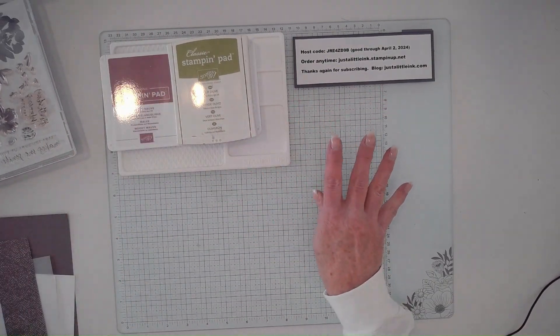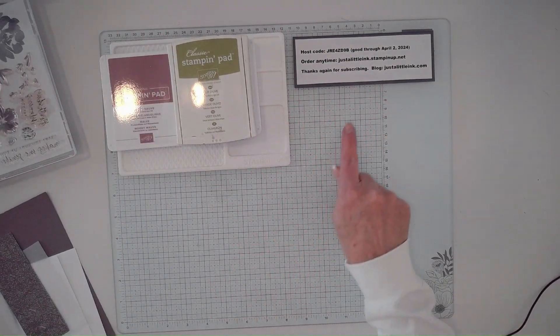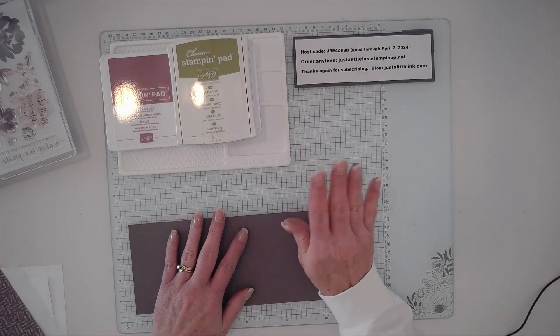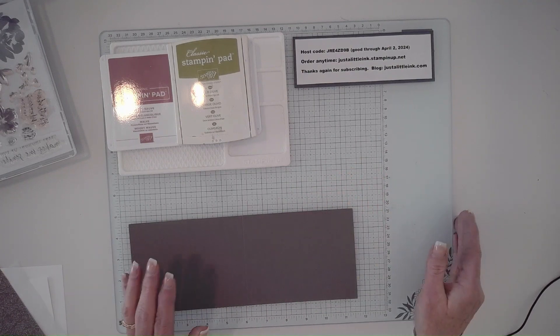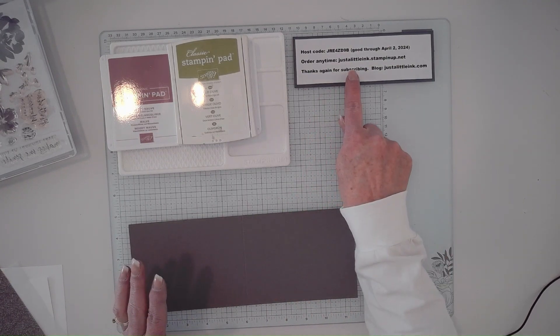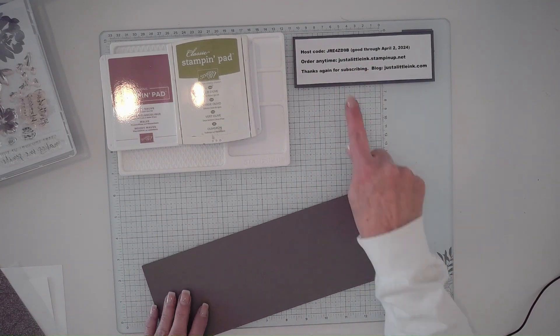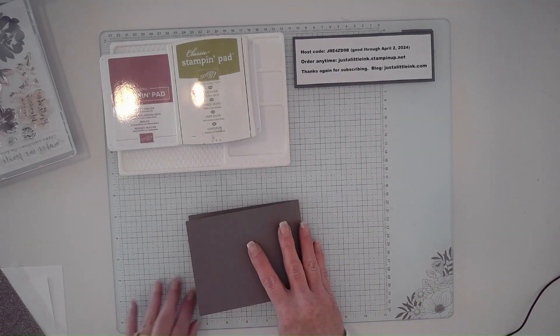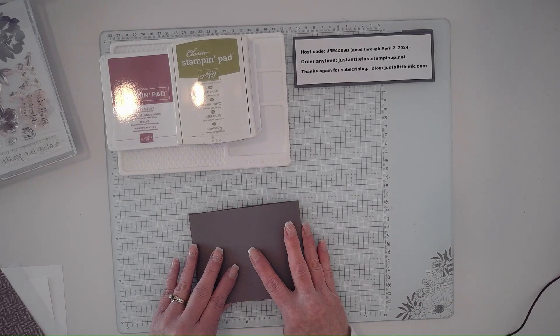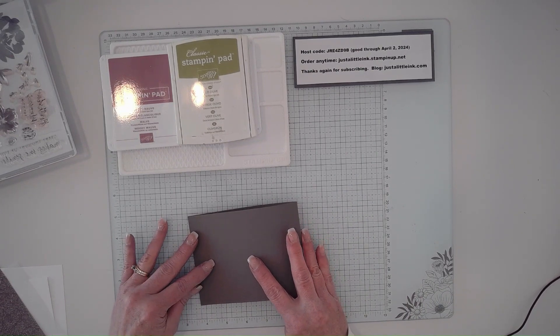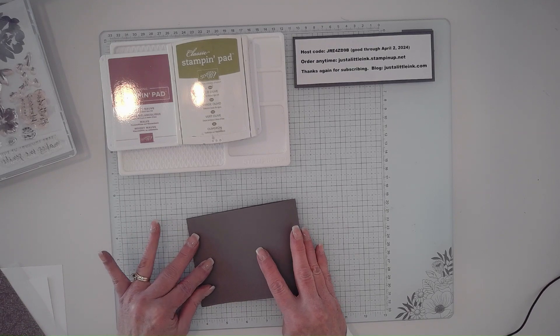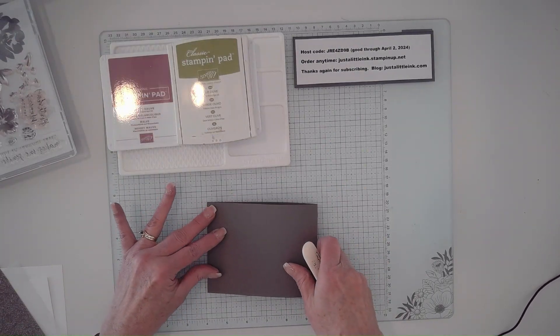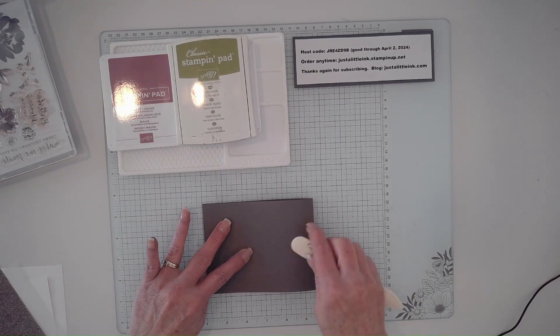If you need any of the supplies I'm using and you don't already have a demonstrator, I would love it if you would order through me. I send thank you notes for every order I receive, and you can find that ordering information at justalittleink.stampinup.net. If you order 150 or more, please do not use my current host code. You will receive your own host rewards from Stampin' Up.